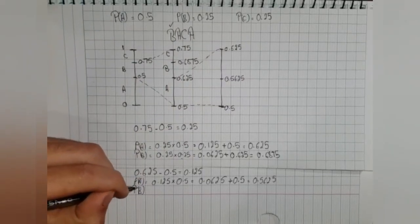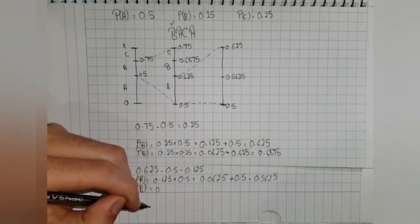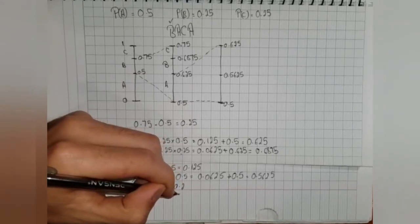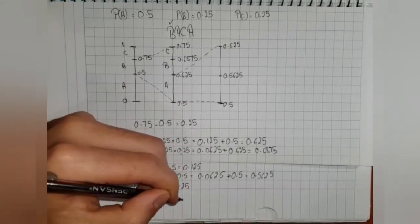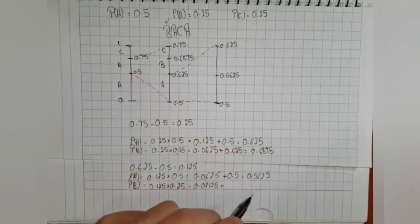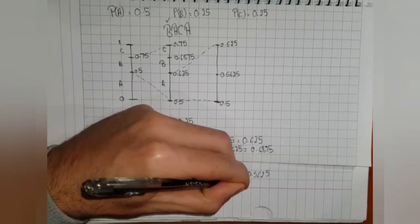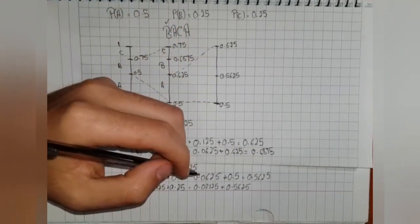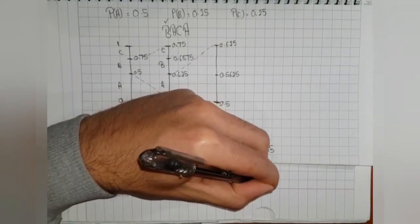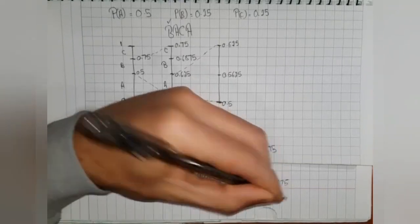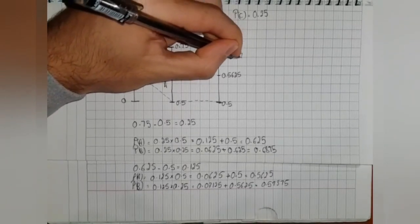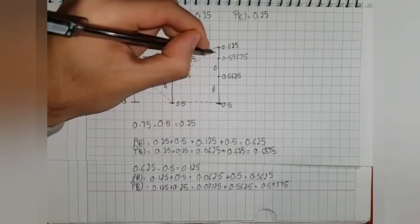For the second probability, we have 0.125 times 0.25. This is 0.03125, and we should add on it this number to see where its location is. This gives us 0.59375, and the location is here. A is here, then B and C.